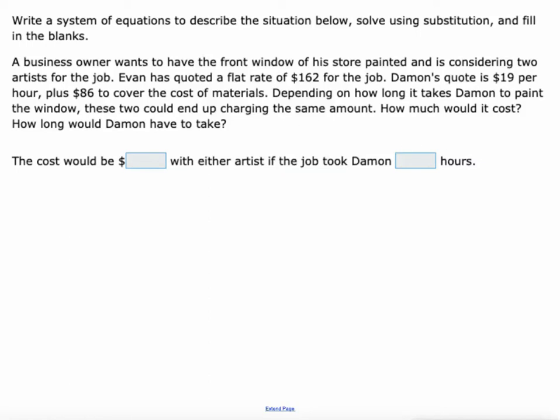As I read this, I'm going to break it down here. A business owner wants to have the front window of his store painted and is considering two artists for the job. Evan has quoted a flat rate of $162 for the job. Meanwhile, Damon's quote is $19 per hour plus $86 to cover the cost of materials. So his is $86 no matter what plus another $19 per hour. Depending on how long it takes Damon to paint the window, these two could end up charging the same amount. How much would it cost and how long would it take Damon in that case?